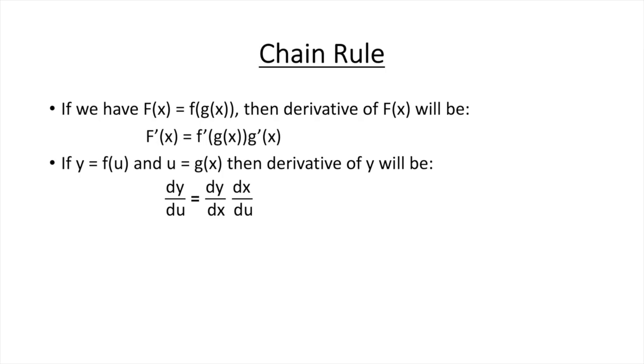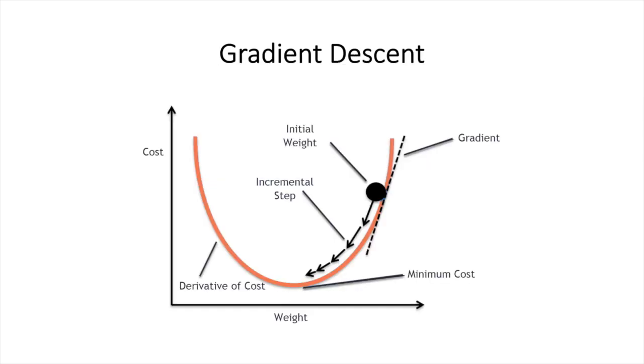So we talked enough about calculus. Let's get started with backpropagation. As we discussed in last video, neural network's only task is to get values for weights and biases so that it can produce more accurate output for a new input that is from outside training data.